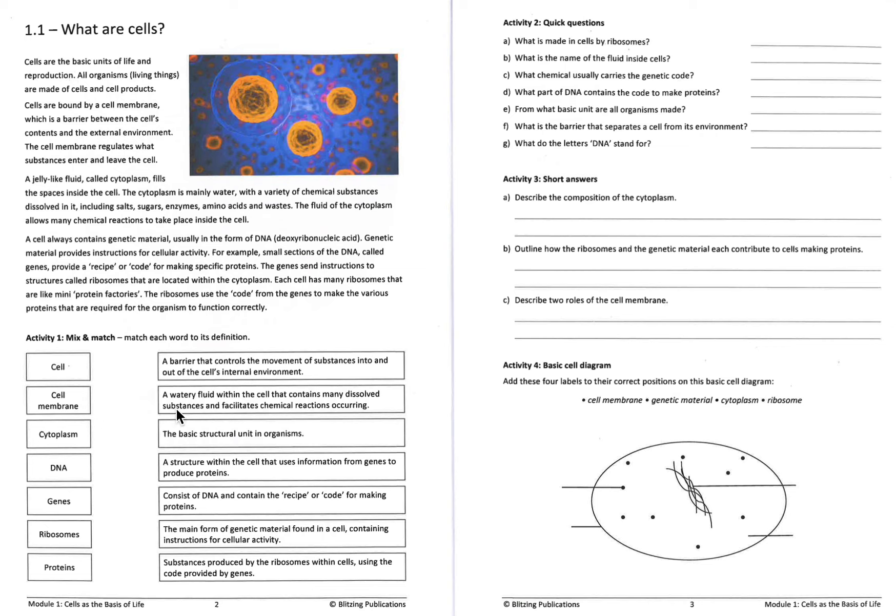But also, down here, if you look in your mix and match activity one down here, you've got a cell and you had to find and match that up with a line. So if you look down here, you hopefully would have found, well, is it a barrier? No. Watery fluid? No. Basic structural unit? Yeah, maybe. Structure within the cell? No. Not DNA, not genetic material, not substances by the ribosome. So the answer to the definition of the cell is the structural unit of an organism.